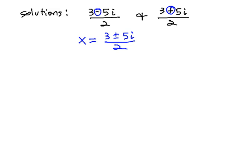And again, we want to get rid of the fraction. So we get rid of the fraction by multiplying by 2, that LCD, giving us 2x equals 3 plus or minus 5i.